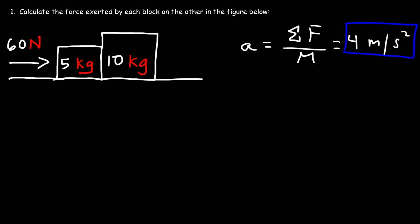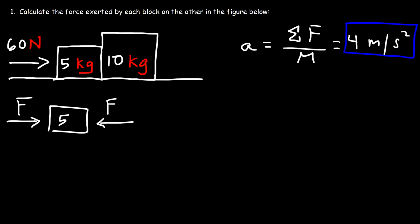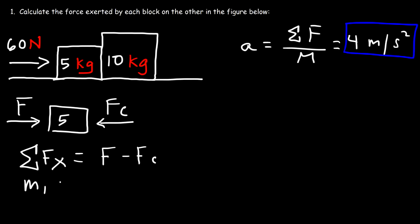Now that we have the acceleration, let's calculate the contact force by focusing on one block at a time — starting with the 5 kg mass. The 5 kg mass feels an applied force of 60 N to the right, and it also feels a contact force from the 10 kg object acting on it. The net force in the x direction on the 5 kg mass is the difference between the applied force and the contact force. Let's call the 5 kg mass M1 and the 10 kg mass M2.